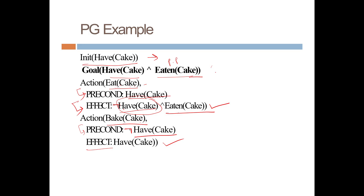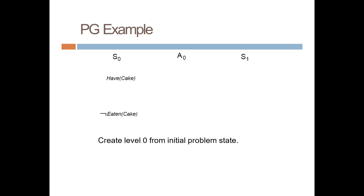Create level 0 from the initial state. S0 is state 0, A0 is action 0, and S1 is the next state. After an action is performed, the resulting next state will be S1. Before the action is performed, the state is S0.